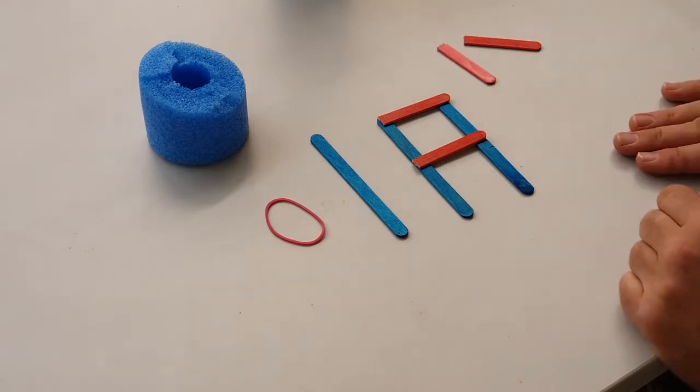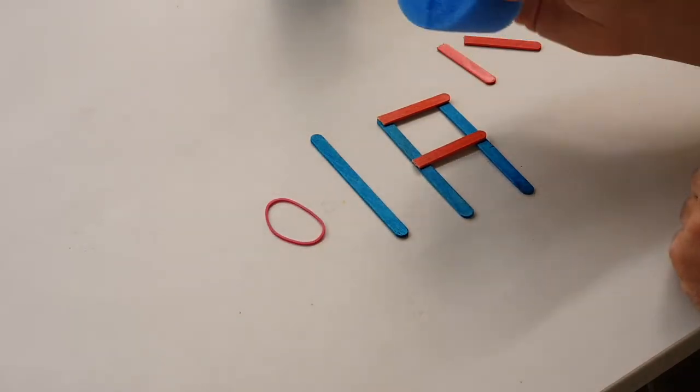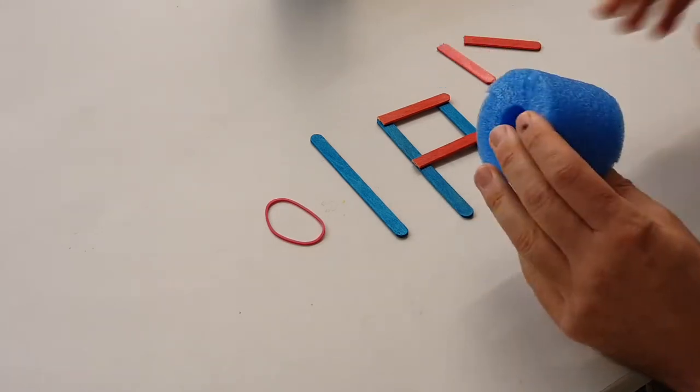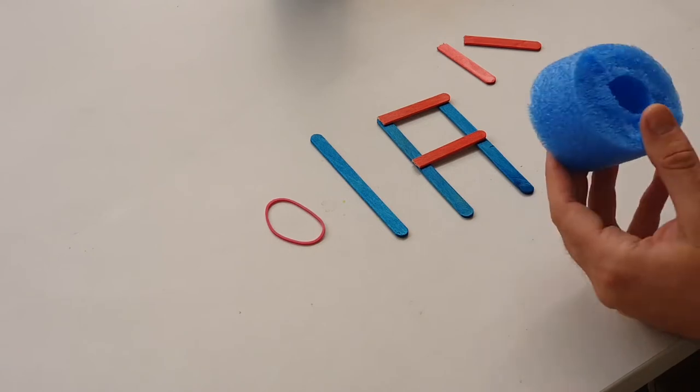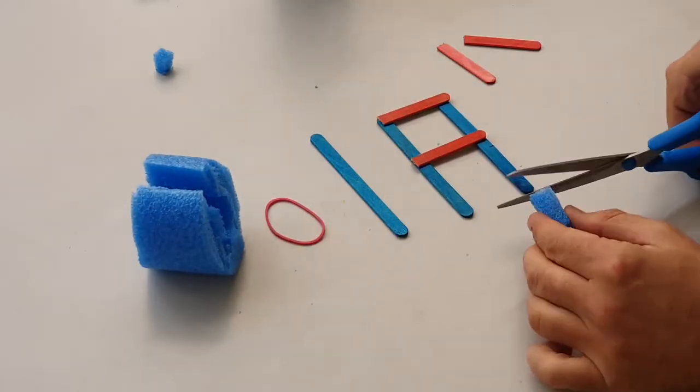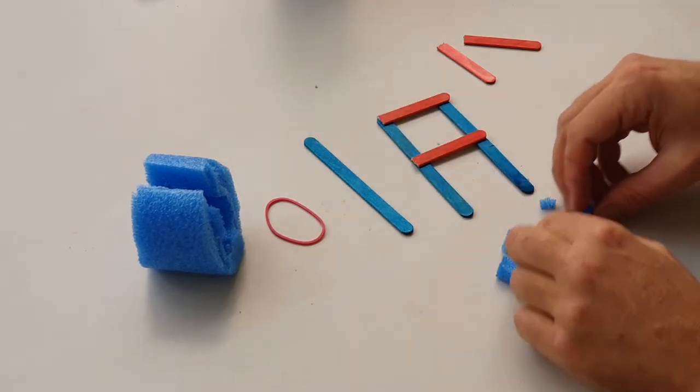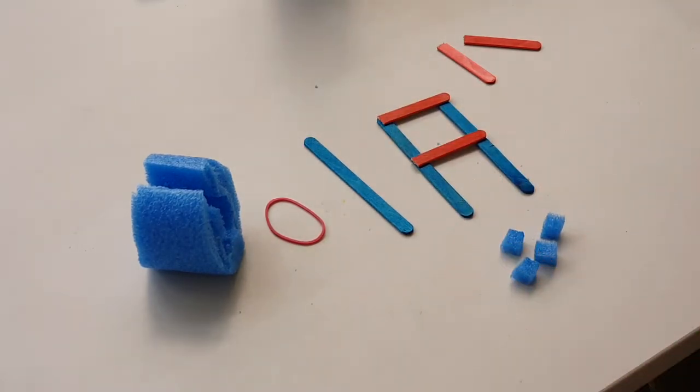All right, what we'll do before we glue that is get our foam and we're going to cut four little cubes out of it. Okay, so now I've got four little cubes, roughly the same size. It doesn't have to be perfect.